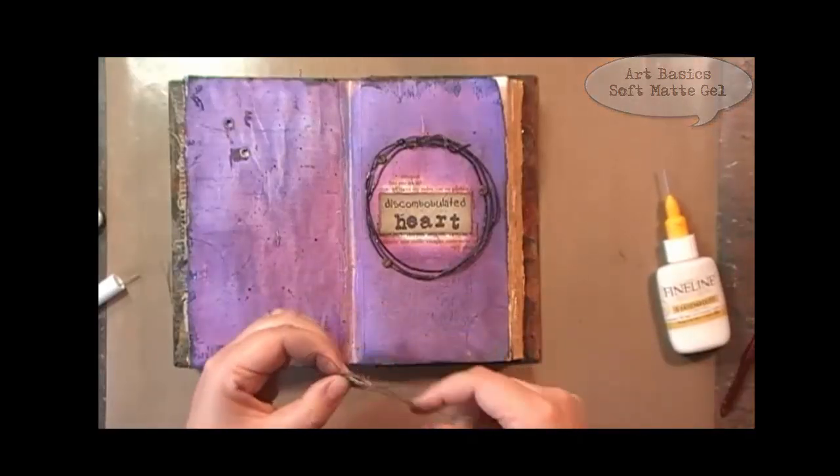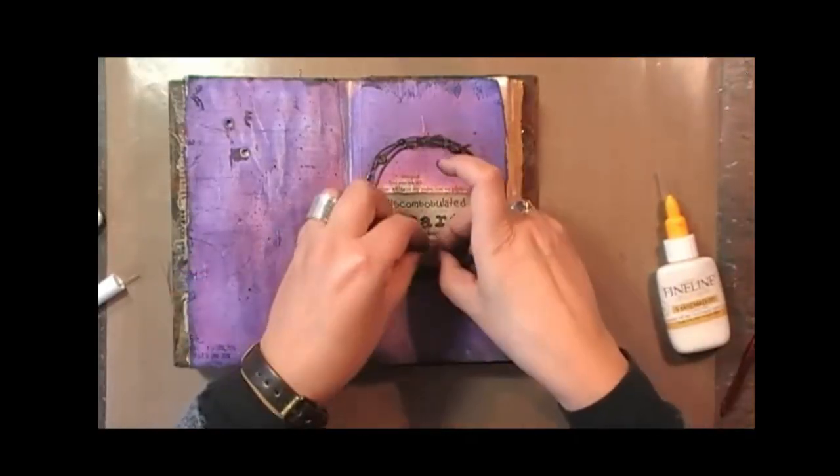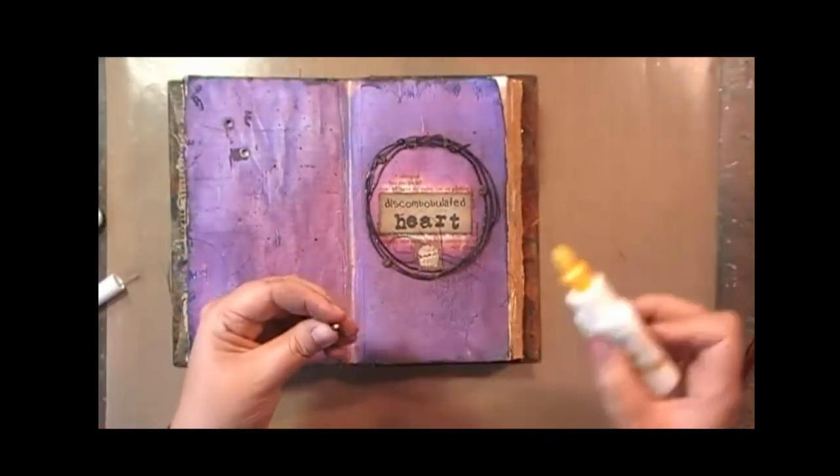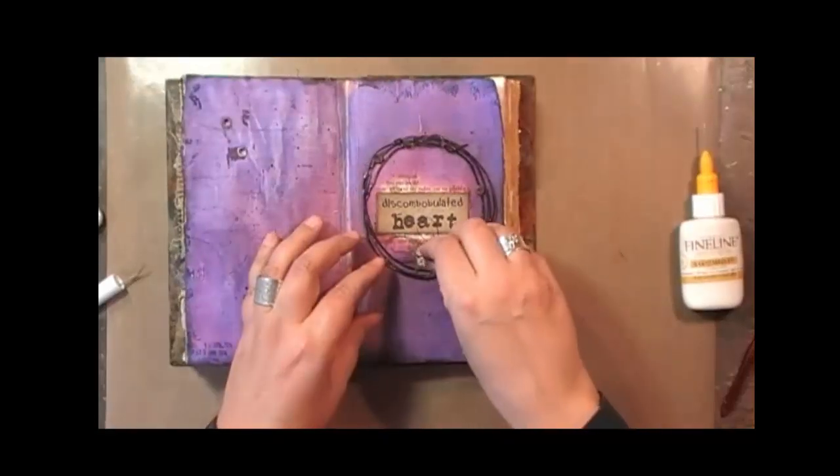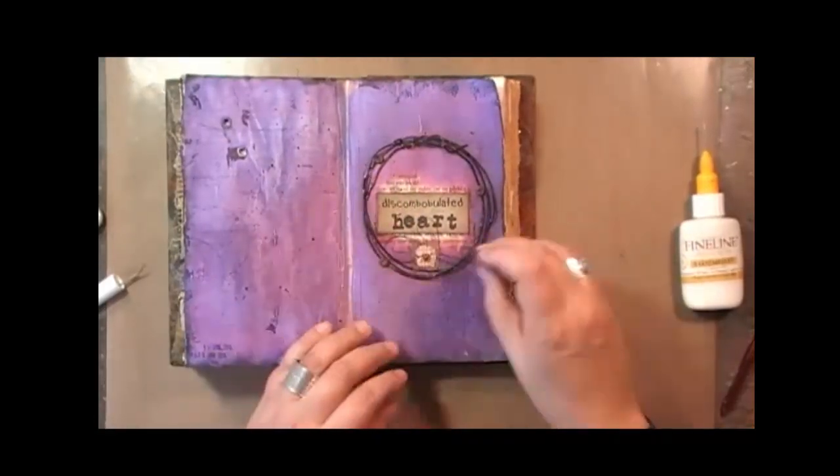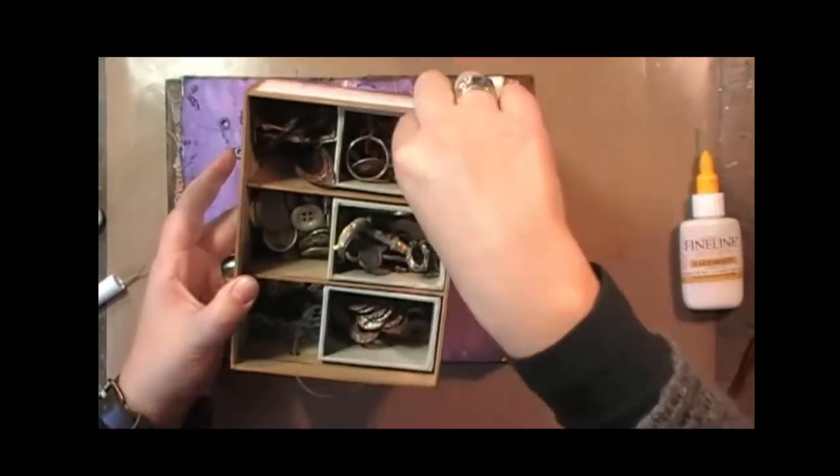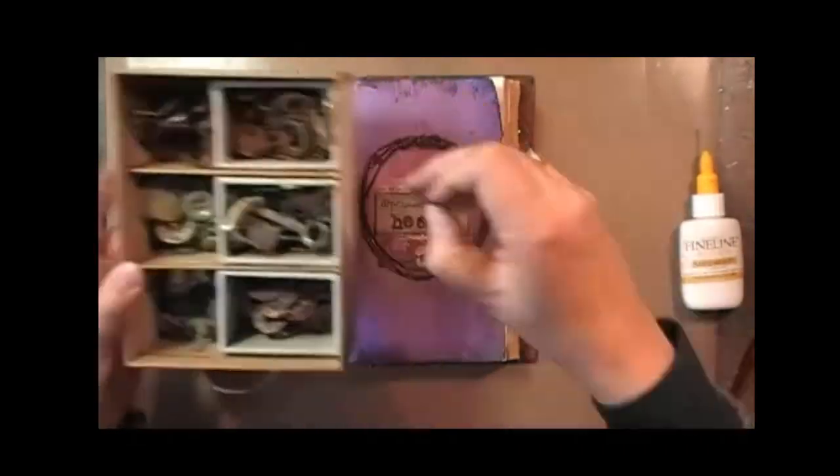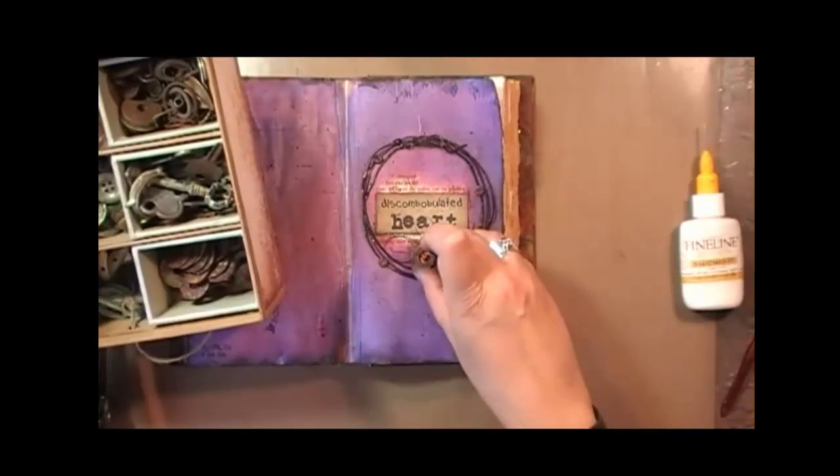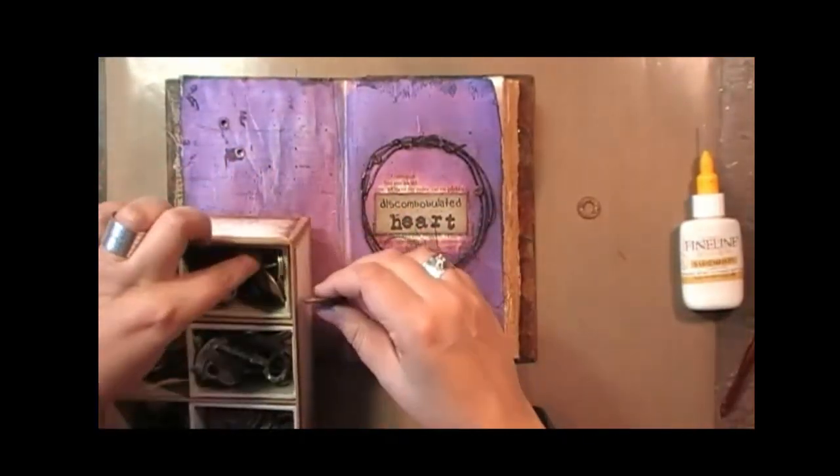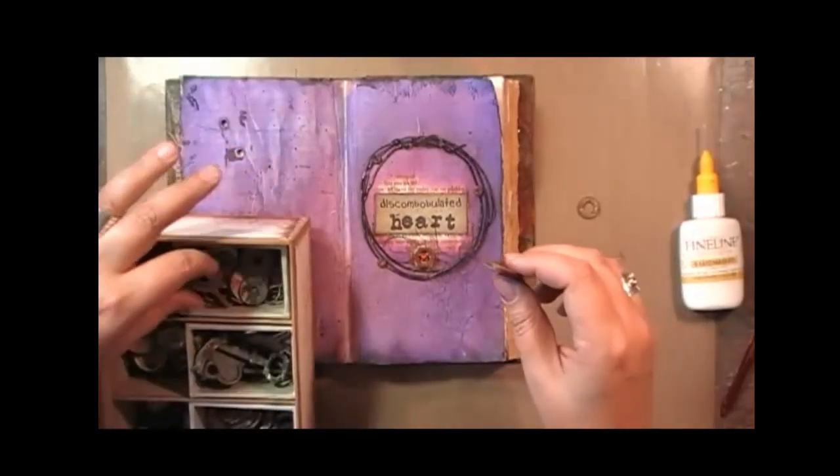Just gluing it down using soft matte gel from Fennevar, and I wanted to add a little tiny heart. I also wanted to add a piece of metal around that heart. This is one of the drawers of the chest that I made for mixed media place.